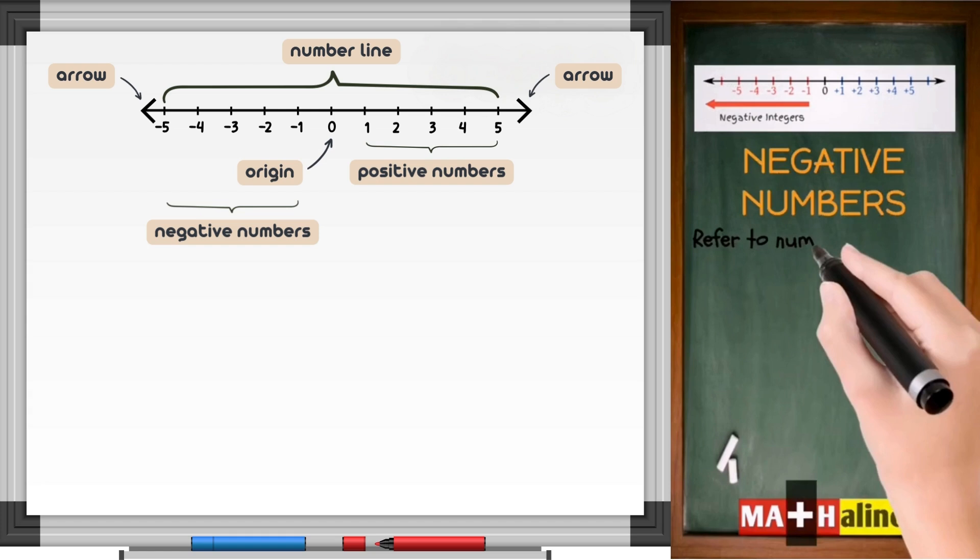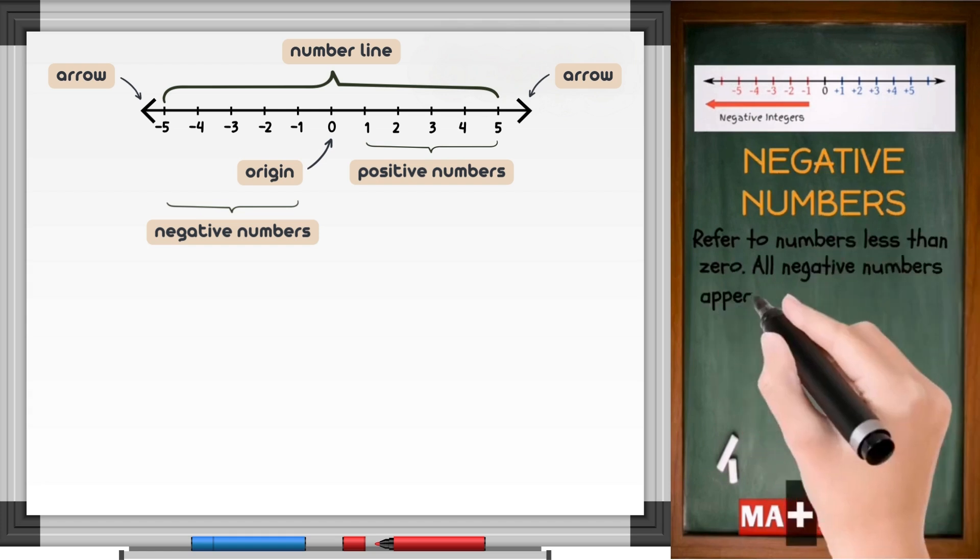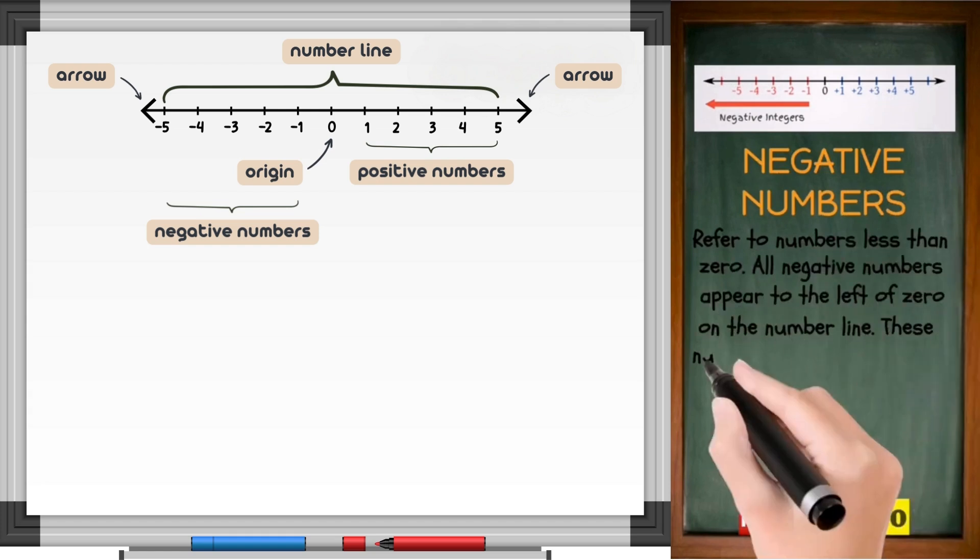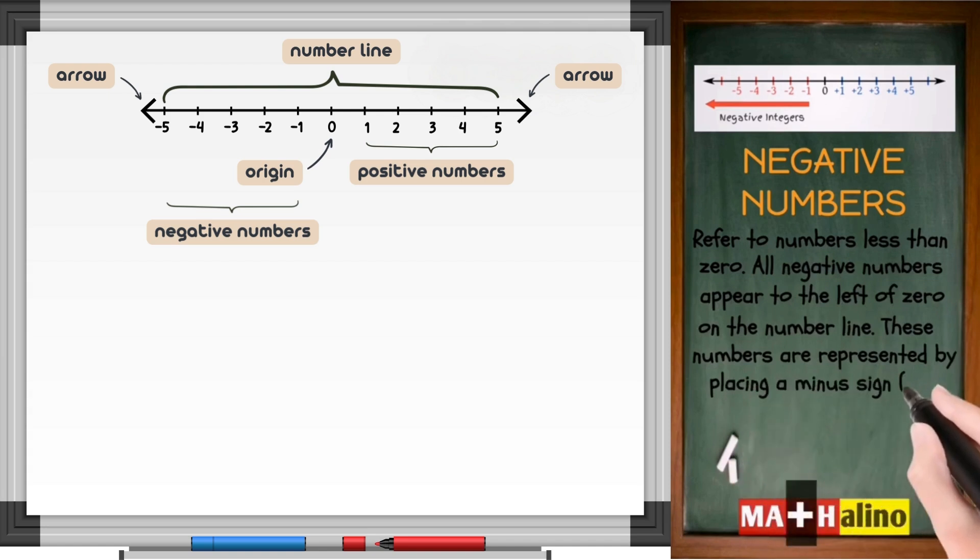Negative numbers. Refer to numbers less than zero. All negative numbers appear to the left of zero on the number line. These numbers are represented by placing a minus sign in front of the number.